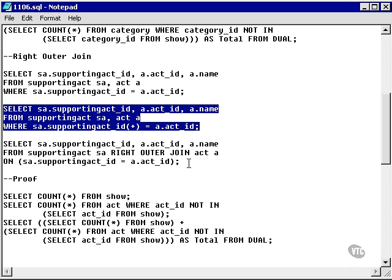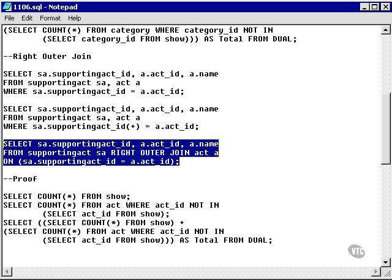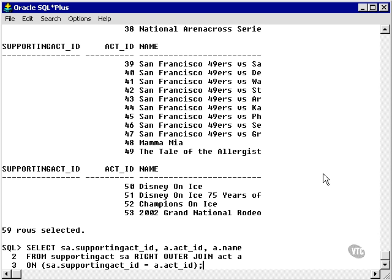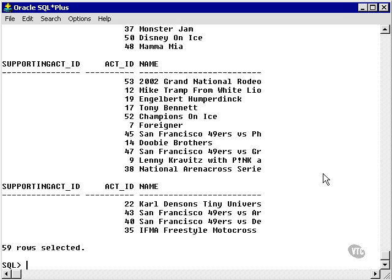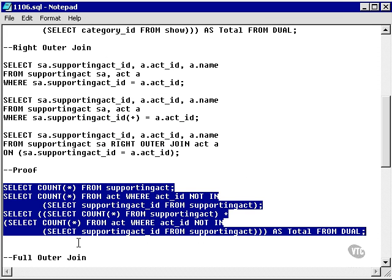Let's go back to the script again. And we'll just run through with the ANSI version. I get 59 rows as well. Now let's go and prove that right outer join.